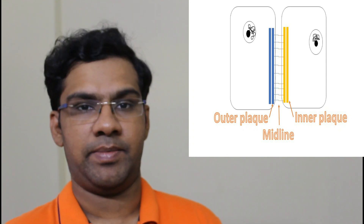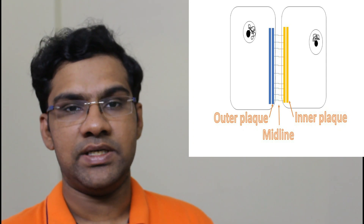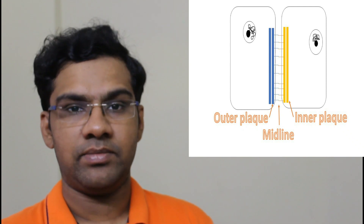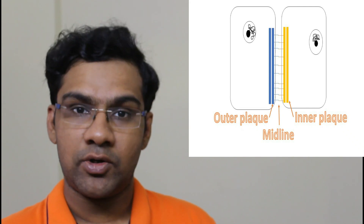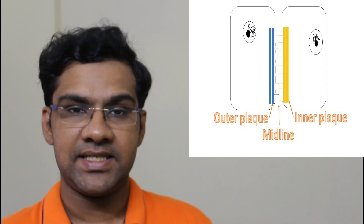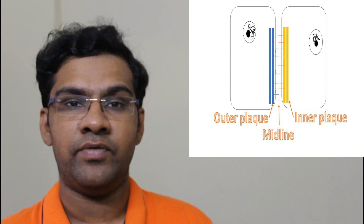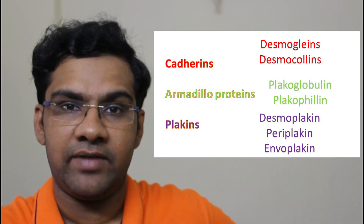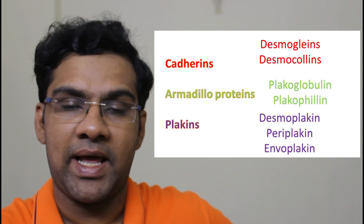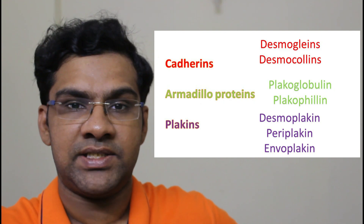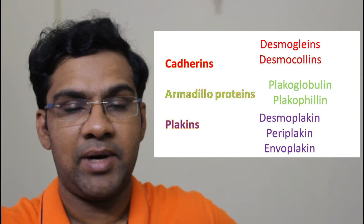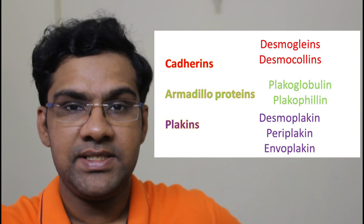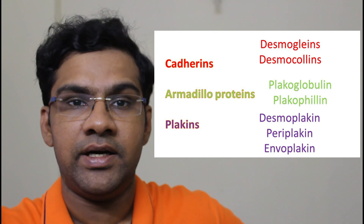The plaque closer to the nucleus is called the inner plaque, and the one away from the nucleus is the outer plaque. Both plaques are electron dense. There are extracellular proteins which meet at the center, forming an electron-dense midline between the cells. The inner plaque consists of proteins belonging to the plakin family — the most common protein is desmoplakin. The outer plaque proteins belong to the armadillo junction proteins: plakoglobin and plakophilin. The extracellular components belong to the cadherin family: desmoglein and desmocollin.